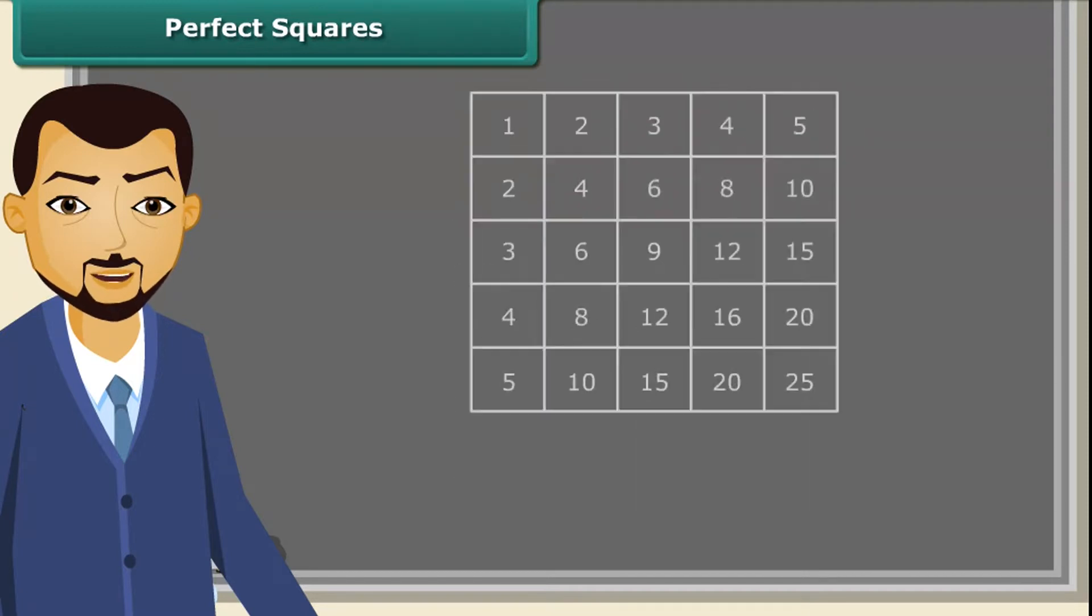We can also find squares on the multiplication table. Do you know what do we call these numbers? They are called perfect squares. The perfect squares are the squares of the whole numbers.